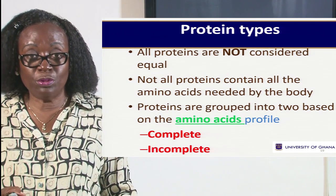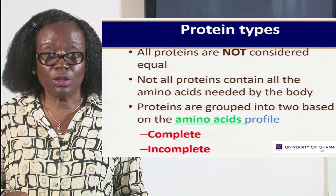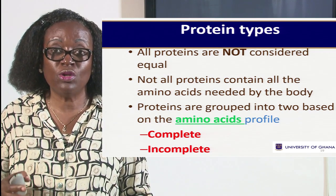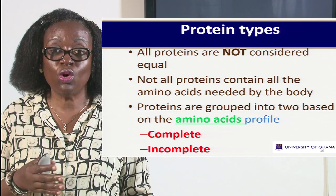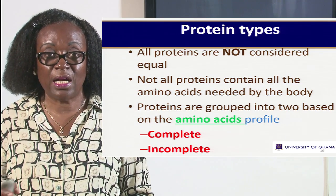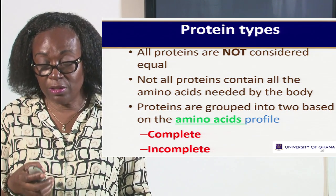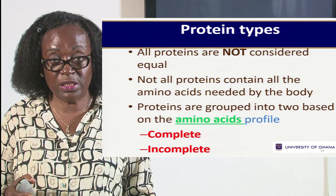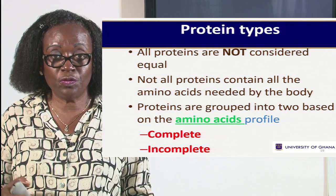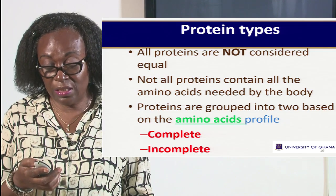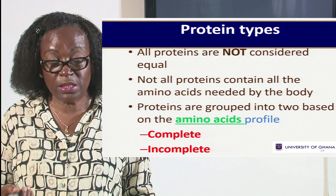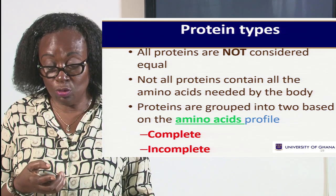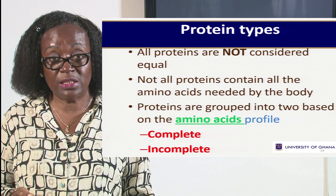We can divide proteins into two major groups — complete and incomplete proteins — and this is due to the amino acids that they contain. Those which contain all the essential amino acids are known as complete proteins, and those that lack some of the essential amino acids — such as lysine, tryptophan, methionine — are known as incomplete. So when we take maize, for example, it contains proteins, but they are incomplete because it lacks the amino acid tryptophan.